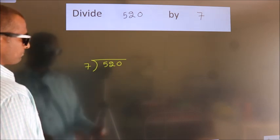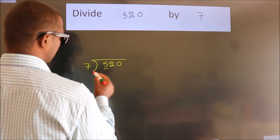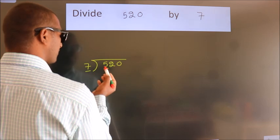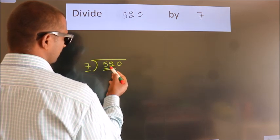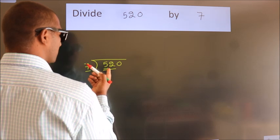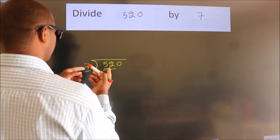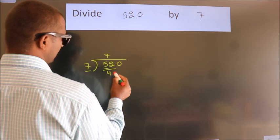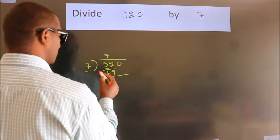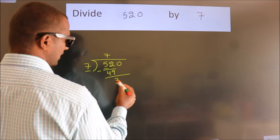Next. Here we have 5, here 7. 5 smaller than 7. So we should take 2 numbers. 52. A number close to 52 in 7 table is 7 times 7, 49. Now we should subtract. We get 3.